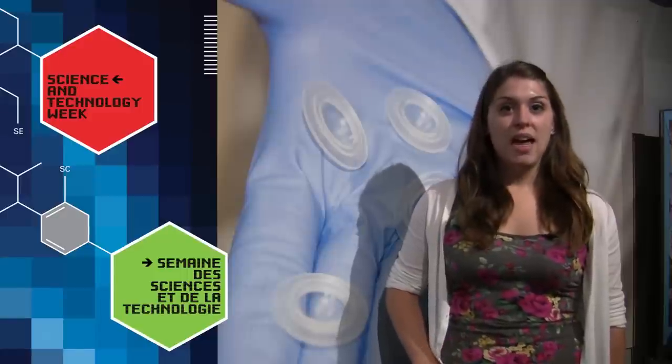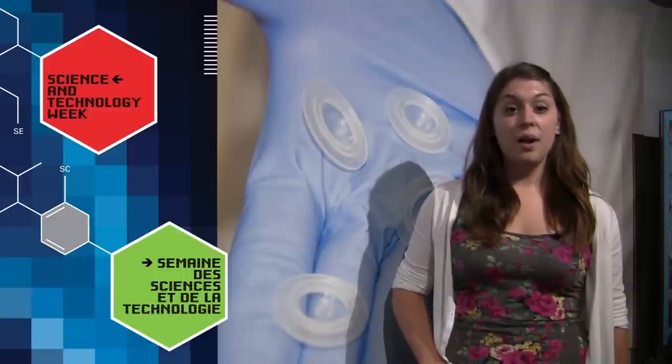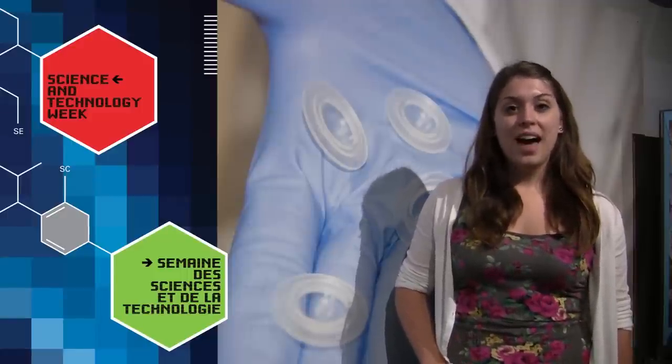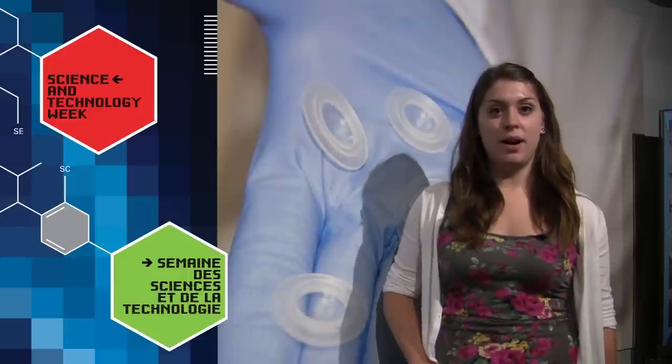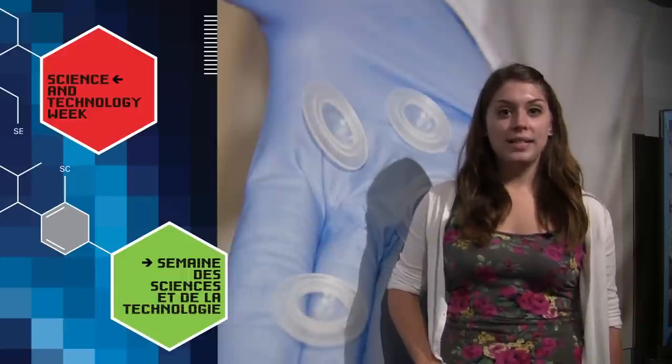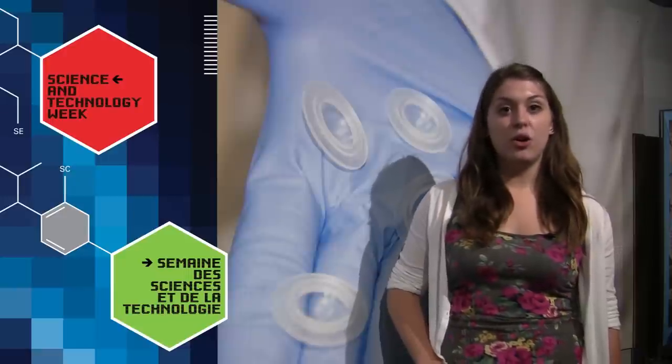Microbes are tiny organisms that are mostly invisible to the naked eye, but they are found everywhere. In fact, there are more microbes on this planet than any other species combined. Their combined weight accounts for more than 60% of the Earth's biomass.